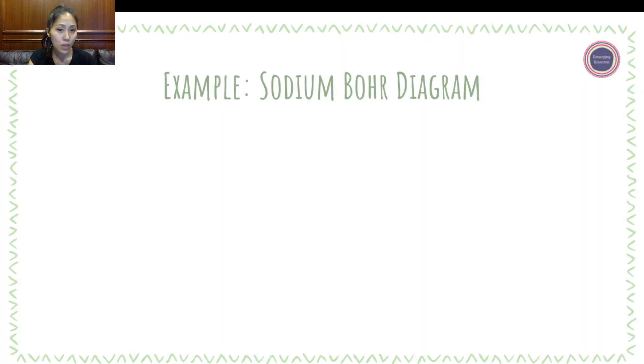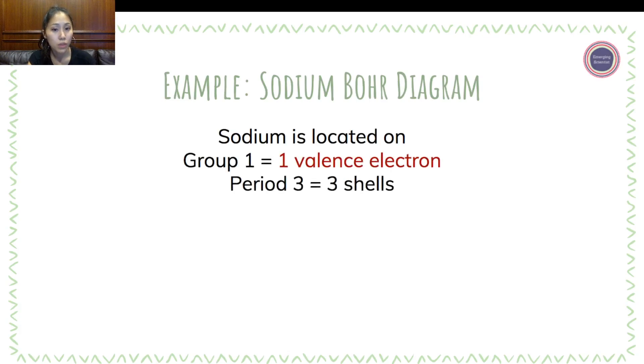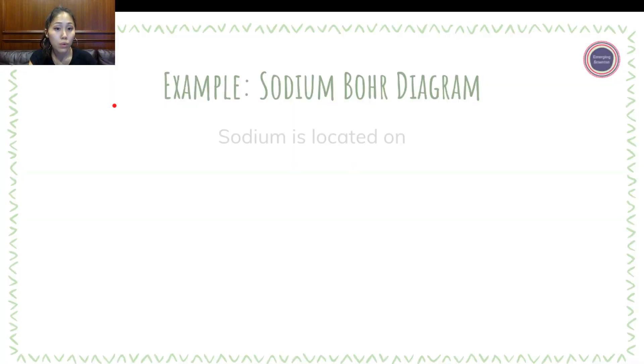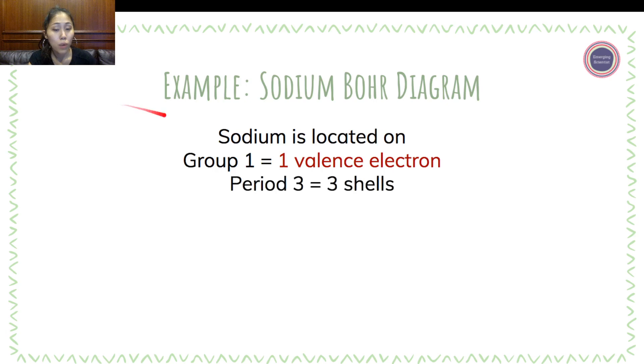The second example is the sodium Bohr diagram. Sodium is located on group 1 and period 3. We take a quick look again. This is in group 1 in period 3, row number 3. We know that group 1 means that it has one valence electron in its outermost shell, and there are a total of three shells.